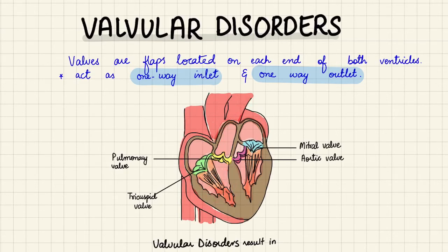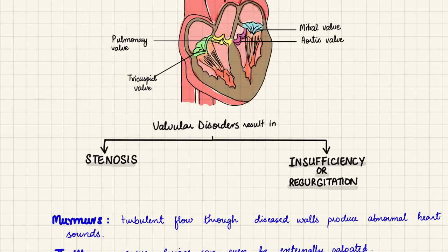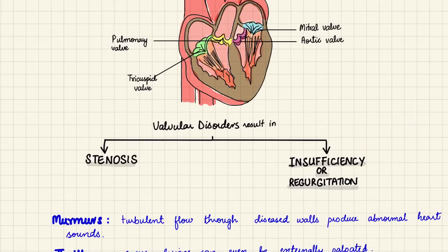Now let's see what sorts of valvular disorders we can have. Firstly, we can have stenosis, which simply means the valvular diameter decreases, making it very narrow and hard to pump blood through. Secondly, we can have insufficiency or regurgitation, where an insufficient valve causes blood to flow in the backward direction rather than forward as intended.